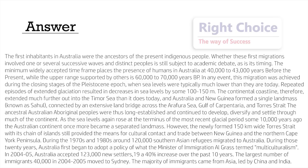The first inhabitants in Australia were the ancestors of the present indigenous people. Whether these first migrations involved one or several successive waves and distinct peoples is still subject to academic debate, as is its timing. The minimum widely accepted time frame places the presence of humans in Australia at 40,000 to 43,000 years before the present.